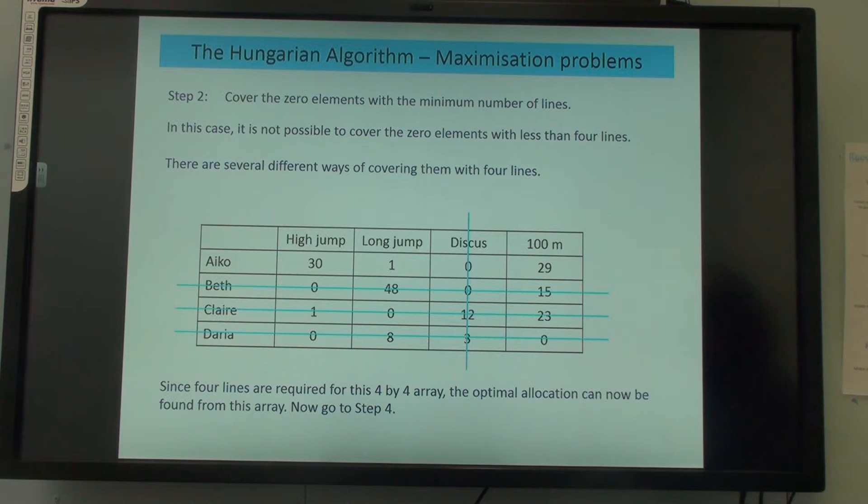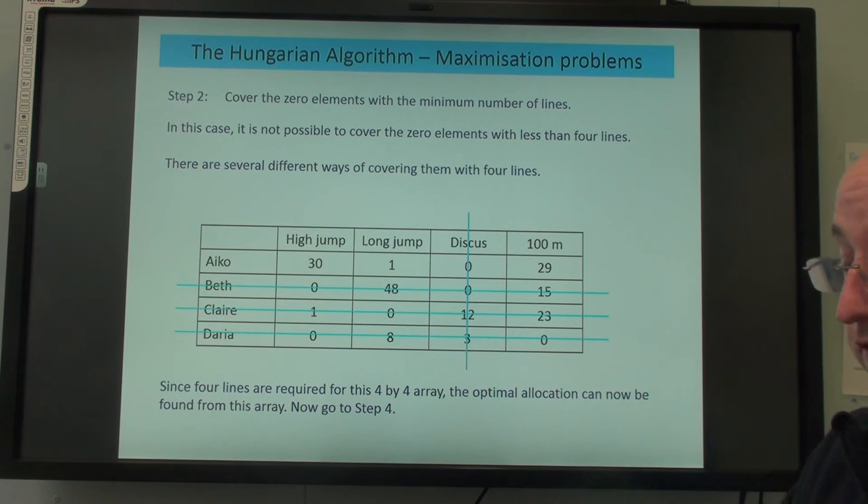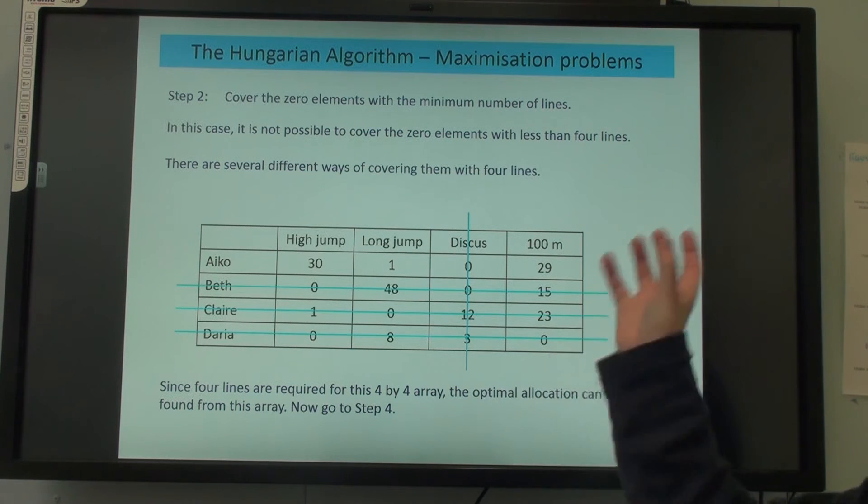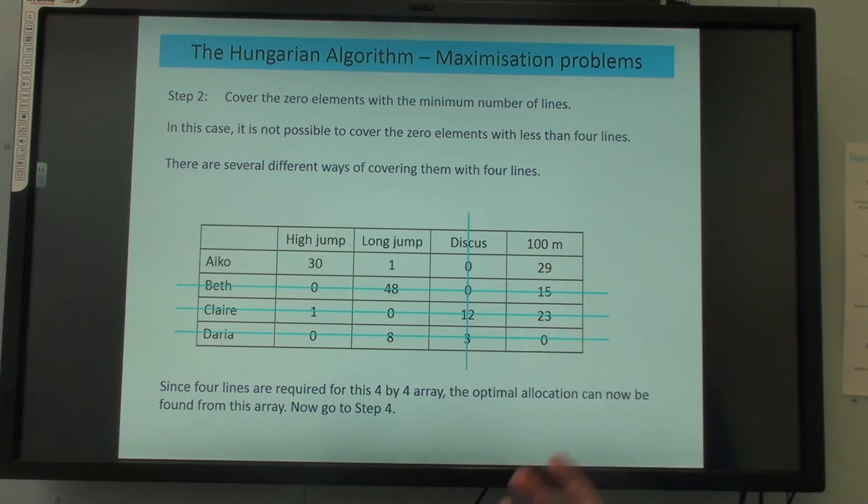So to maximize, you've subtracted the smallest element from each row and the smallest element from each column, or we've started with the biggest element in the whole table and just subtracted everything from that. That gives you your initial table.